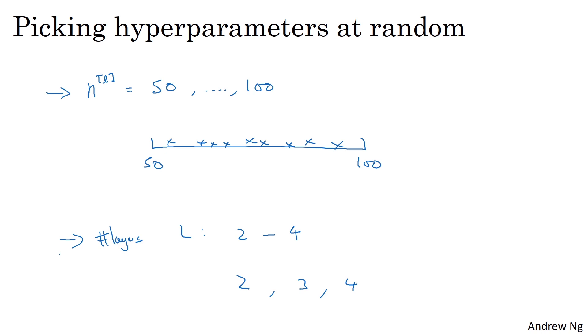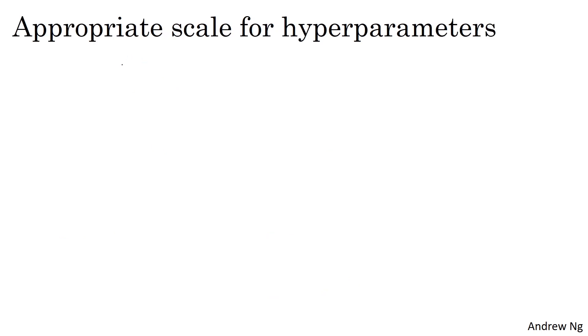But this is not true for all hyperparameters. Let's look at another example. Say you're searching for the hyperparameter alpha, the learning rate. And let's say that you suspect 0.0001 might be on the low end, or maybe it could be as high as one. Now, if you draw the number line from 0.0001 to one, and sample uniformly at random on this linear scale.